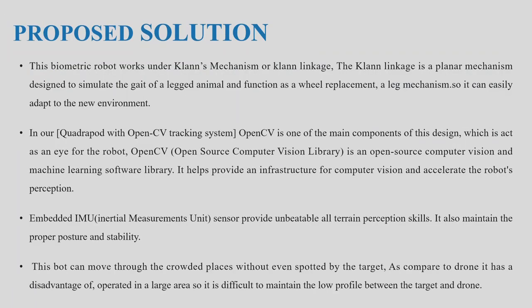The next one is the proposed solution. This biometric robot works under a clance mechanism or clance linkage. The clance linkage is a planar mechanism designed to simulate the gait of legged animals and function as a wheel replacement — a leg mechanism so it can easily adapt to new environments. In our quadruped with OpenCV targeting system, OpenCV is one of the main components of this design, acting as eyes for the robot.